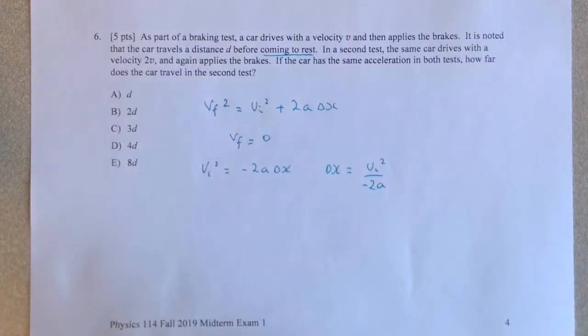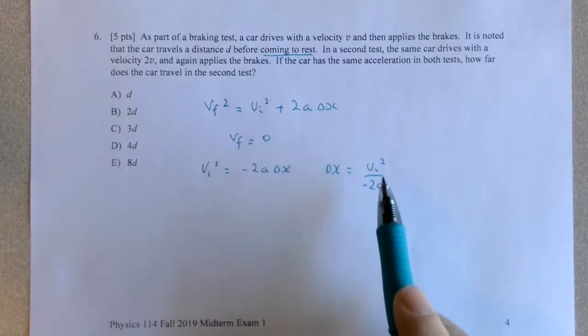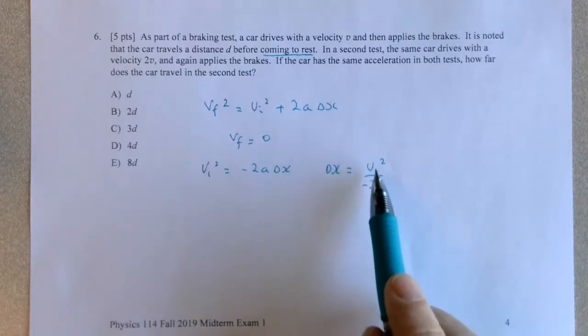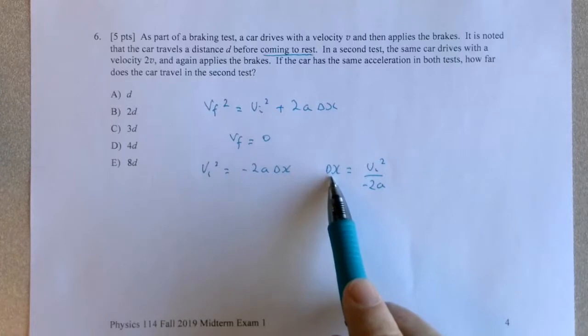Now if the initial velocity is positive and the object is slowing down, this A will be negative. Because A would have to oppose the sign of the initial velocity to slow down. So this negative times the negative A will give you a positive delta X.